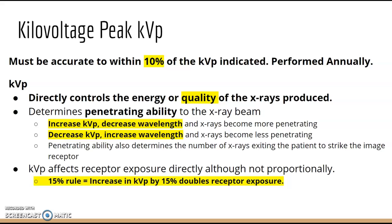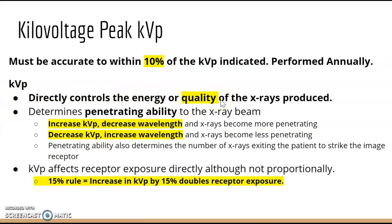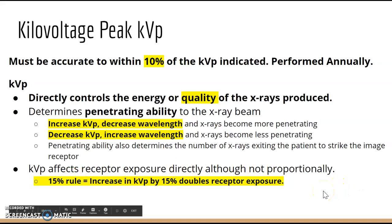As a technologist, you want whatever you set on the control panel to be what your tube actually produces. kVp controls the energy or quality of x-rays produced. A memory tip: kVp is quality because 'kill the vultures' has an L in it. kVp connects to wavelength and penetrability, and it does affect receptor exposure — by the 15 rule, increasing kVp by 15% doubles your receptor exposure.